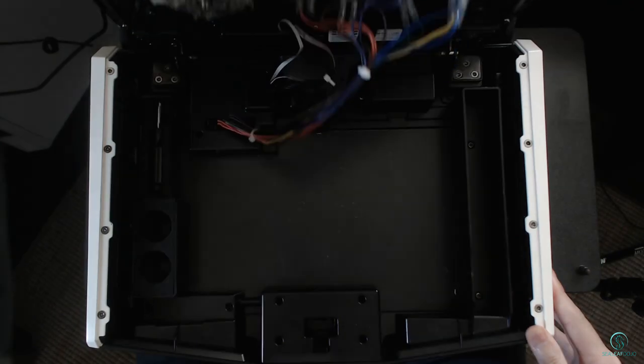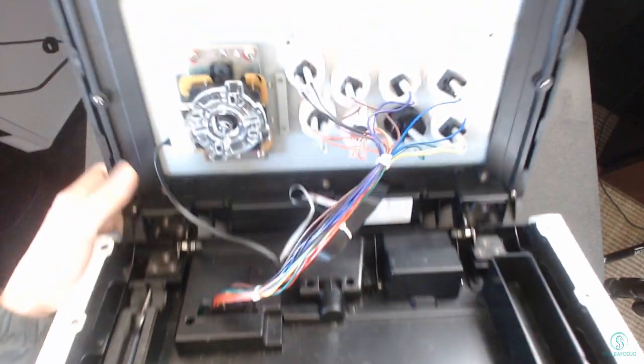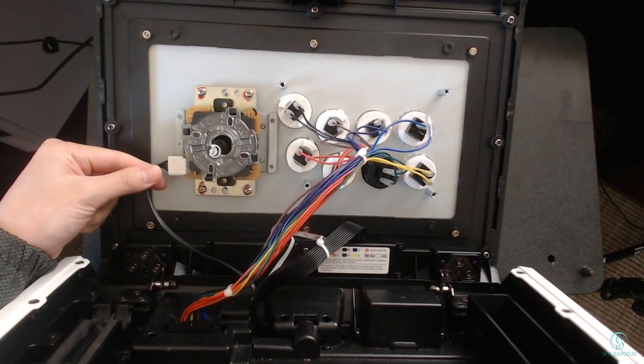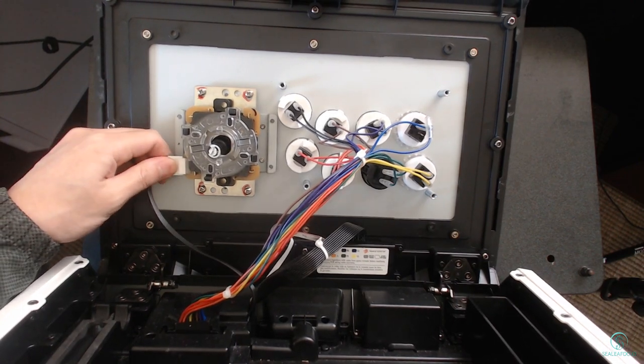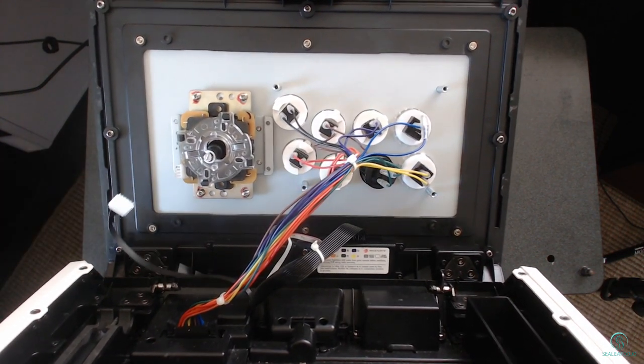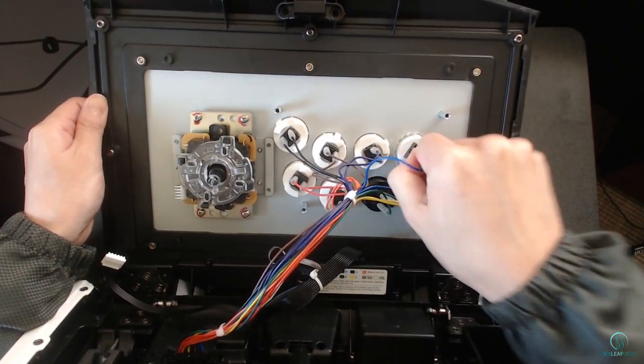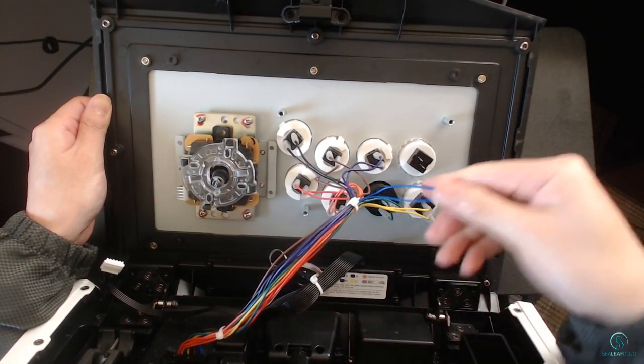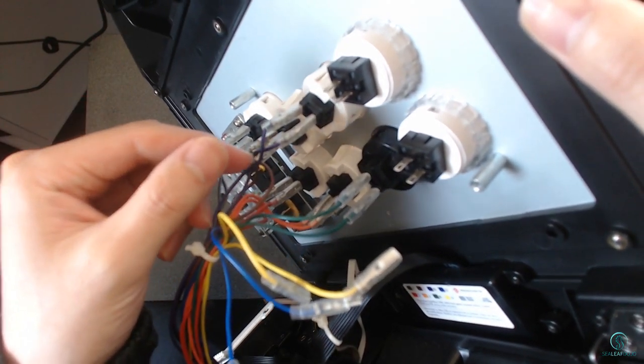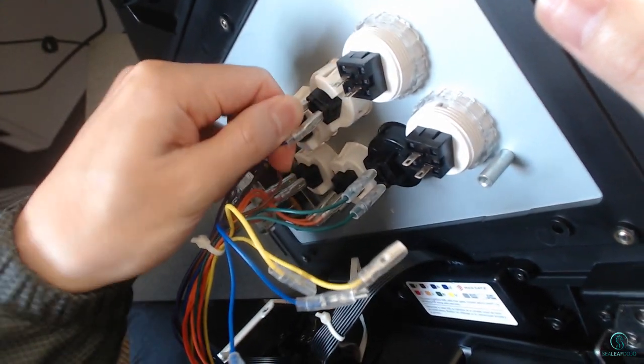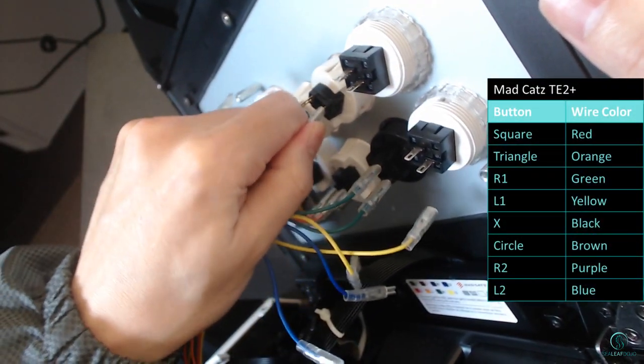Once we have access to the back of the faceplate, we need to remove the wires to the buttons and stick. It is important here to label or note which wire pair goes to which button when removing. If you do not, you will have to play a guessing game later on when connecting buttons to your prototype. I suggest making a table like I have here to record this information.